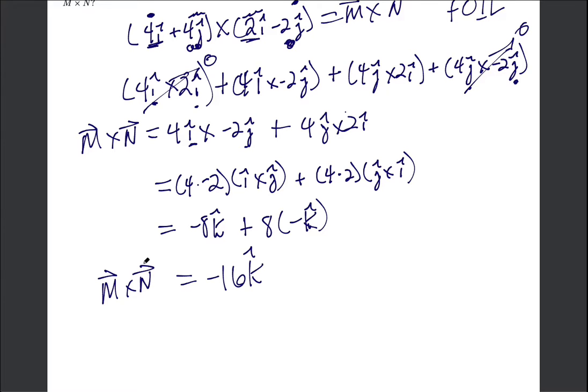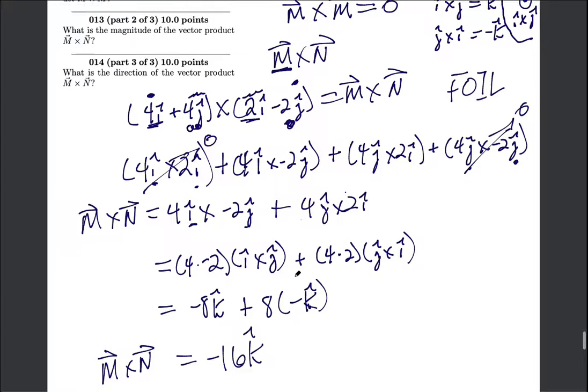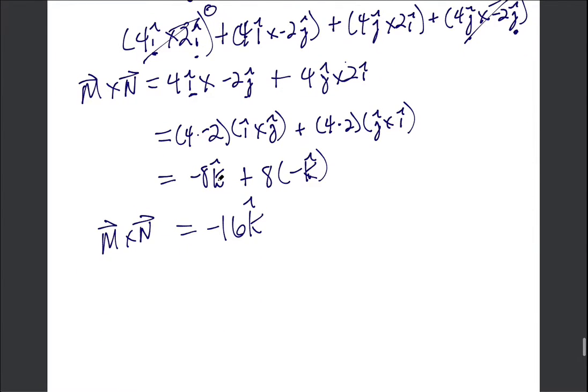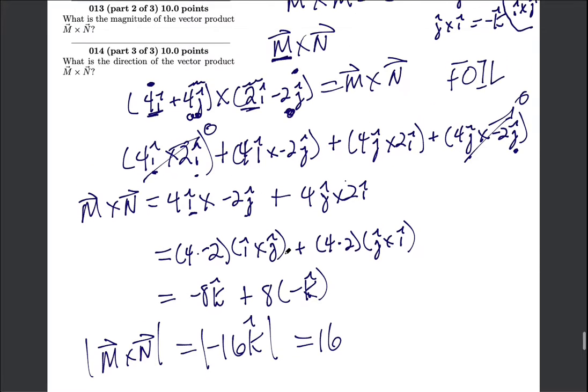So one of the questions was what was the magnitude, and one of the questions was what was the direction. So if I scroll up, what is the magnitude of the vector product? The length of this vector that I've written. Reminder, a cross product is always a vector. The length of the cross product is just 16, you don't need the negative, it's just the magnitude.